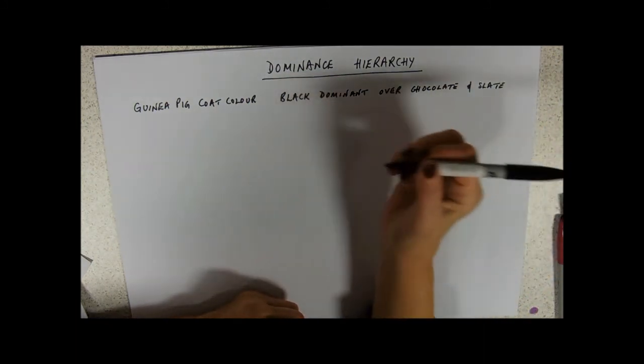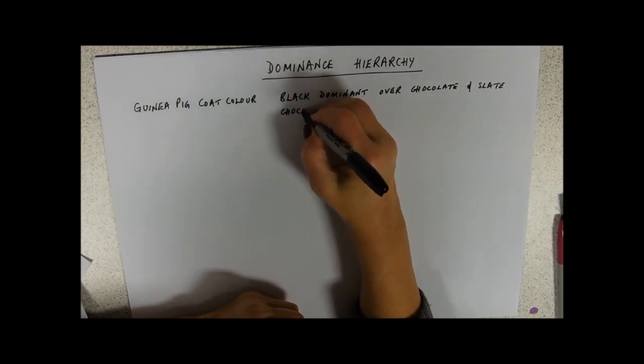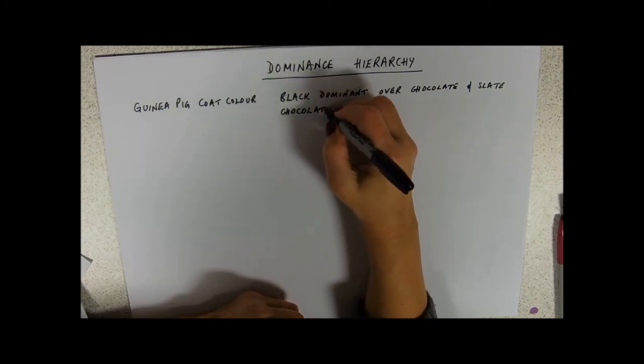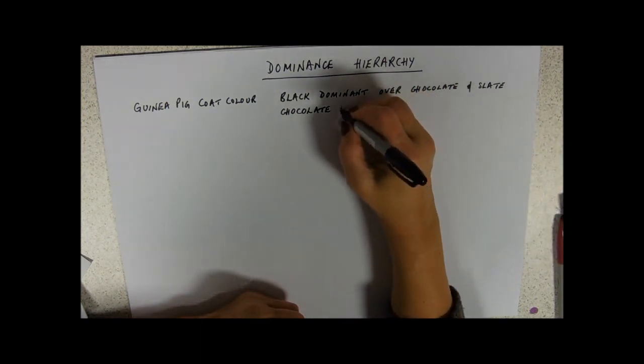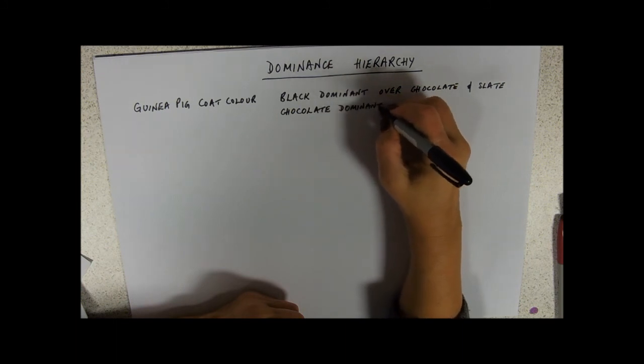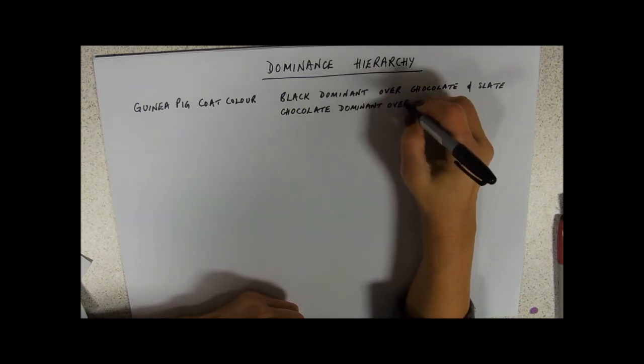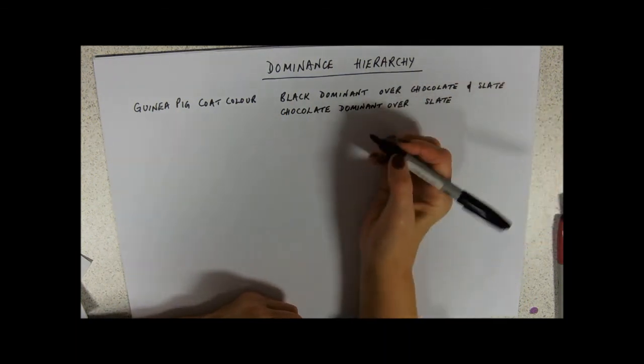And that chocolate, so this might be the sort of information, obviously it will be couched in sentences rather than my abbreviations. And that chocolate is dominant over slate. So this would give us what's called a dominance hierarchy.